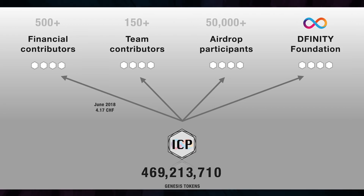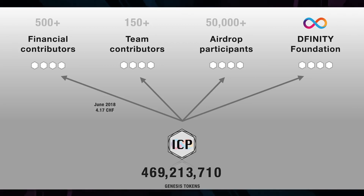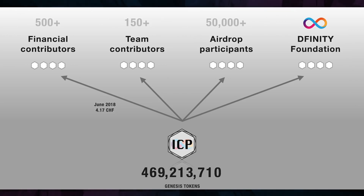They are distributed among four main cohorts. The first cohort is 500-plus financial contributors, made up of those participating in the February 2017 seed round and the later 2018 strategic and pre-sale fundraisers. The pre-sale price in summer 2018 was 4 Swiss francs and 17 cents, or about $4.50. Of course, many things have moved forward since 2018.